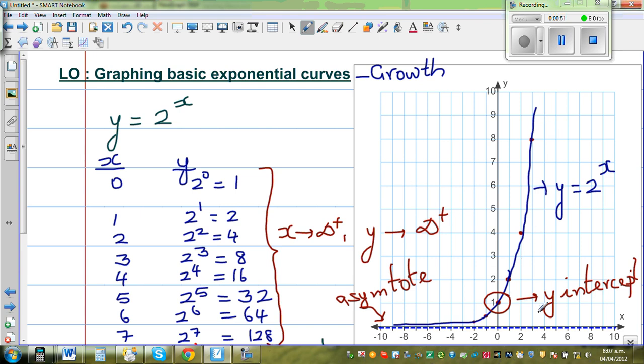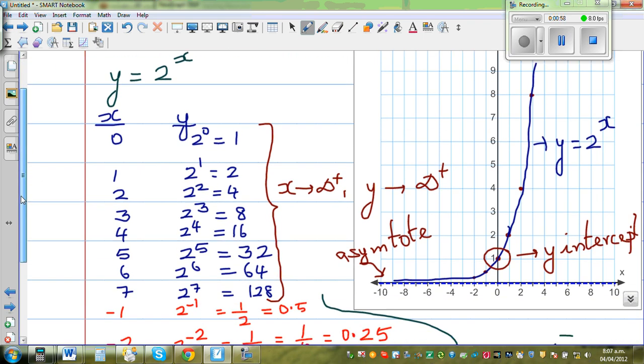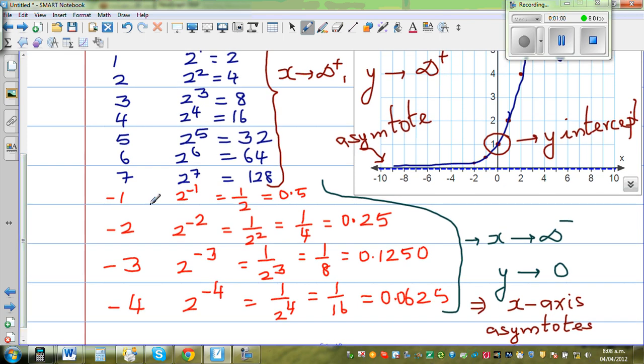So when x is approaching, x is becoming bigger positively, this y will be approaching infinity. And when you took the negative values, you saw that as x is approaching negative values or becoming smaller and smaller, less than zero, your y will be approaching zero. It will never become zero. And I told you this is an asymptote.